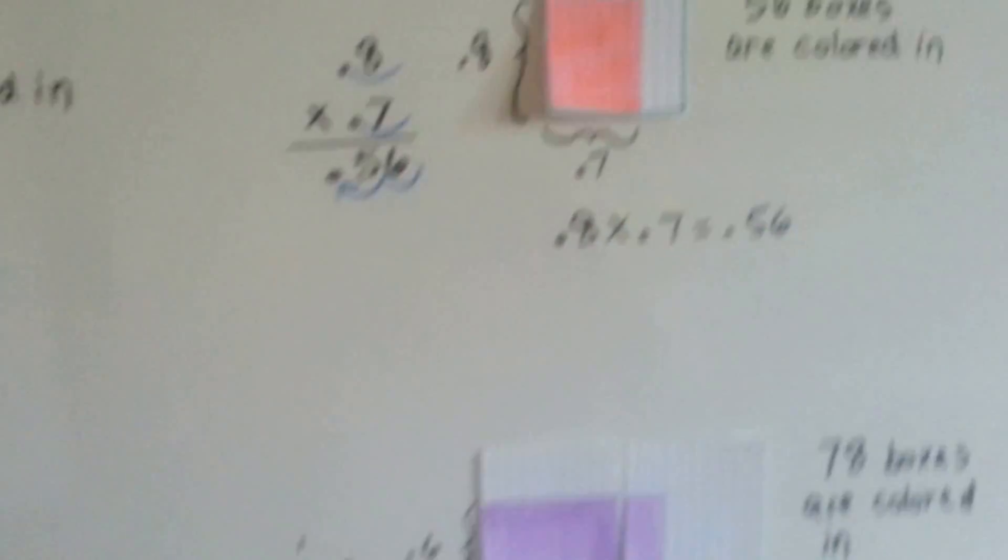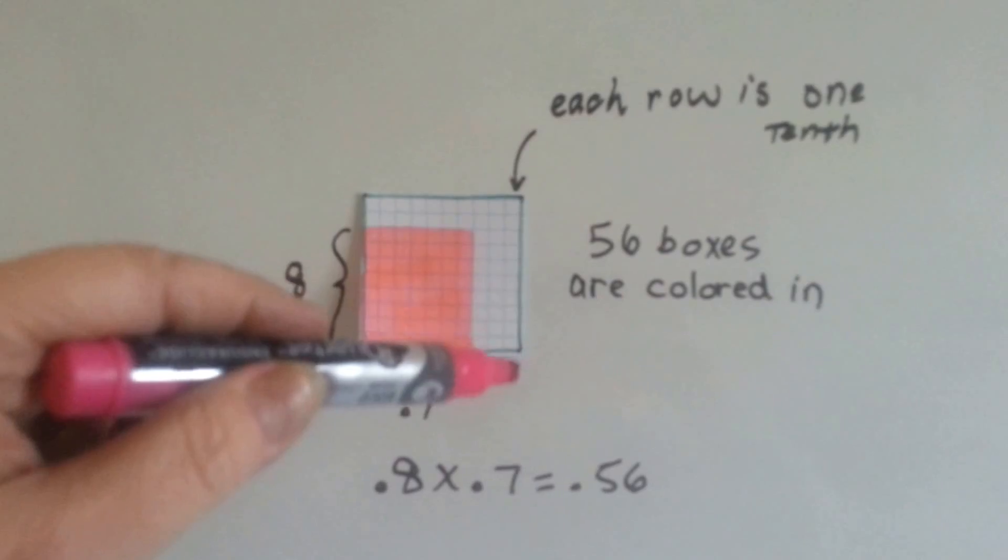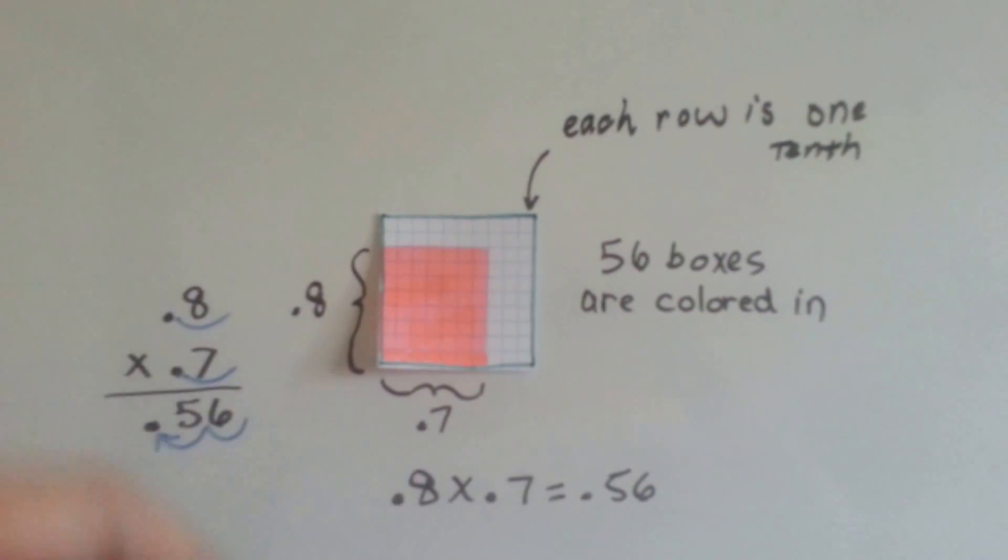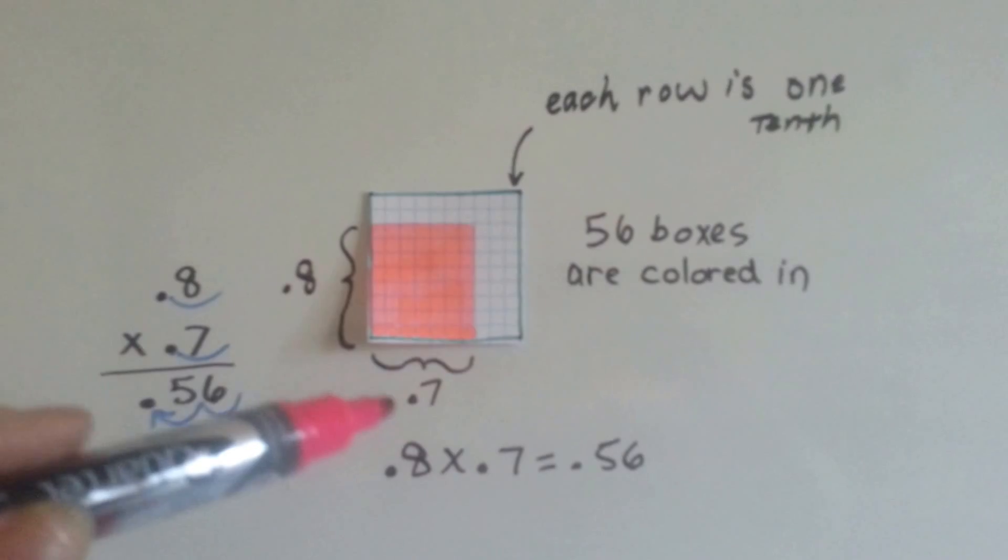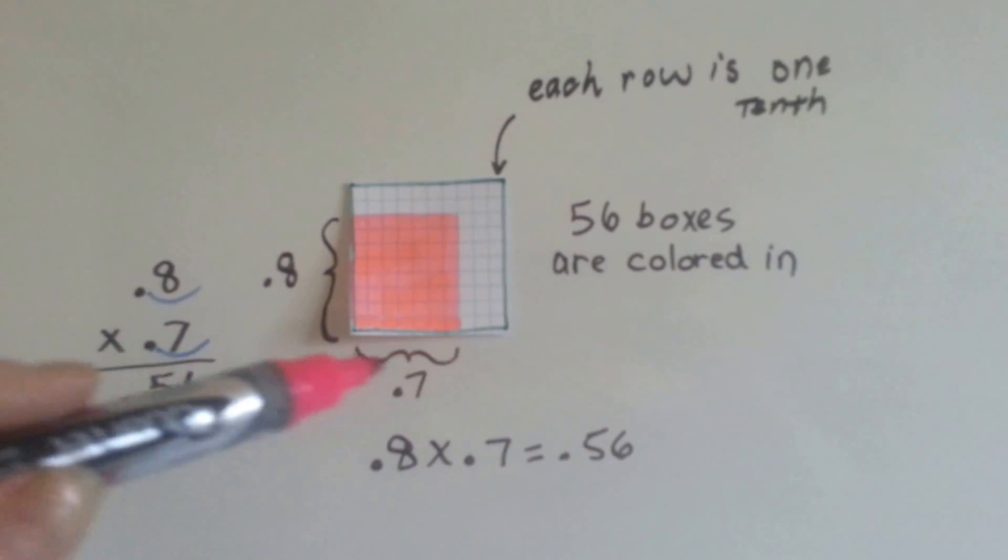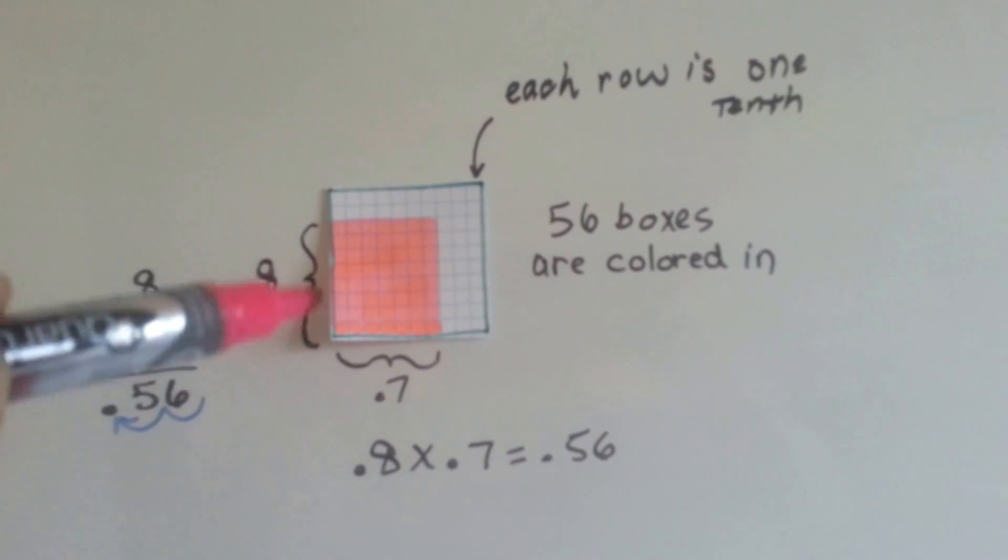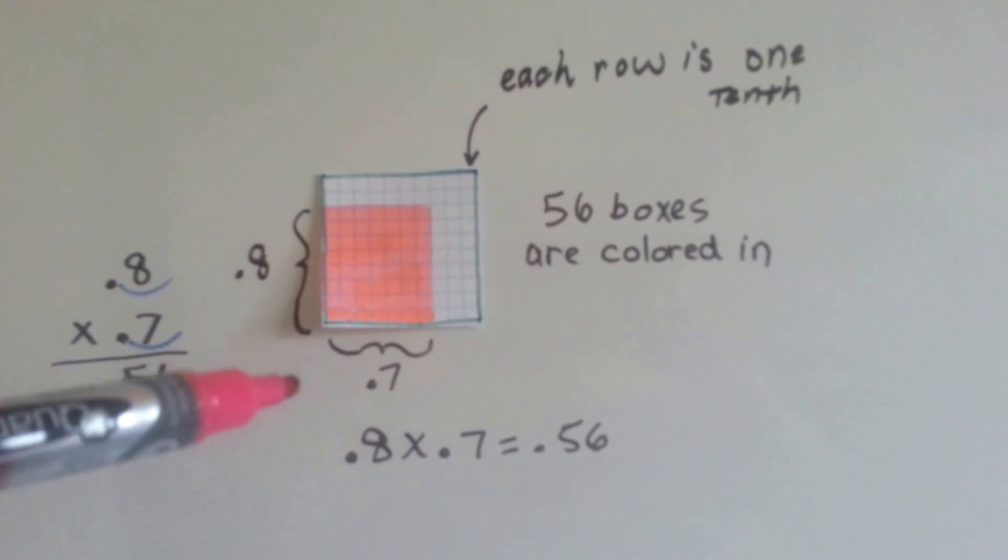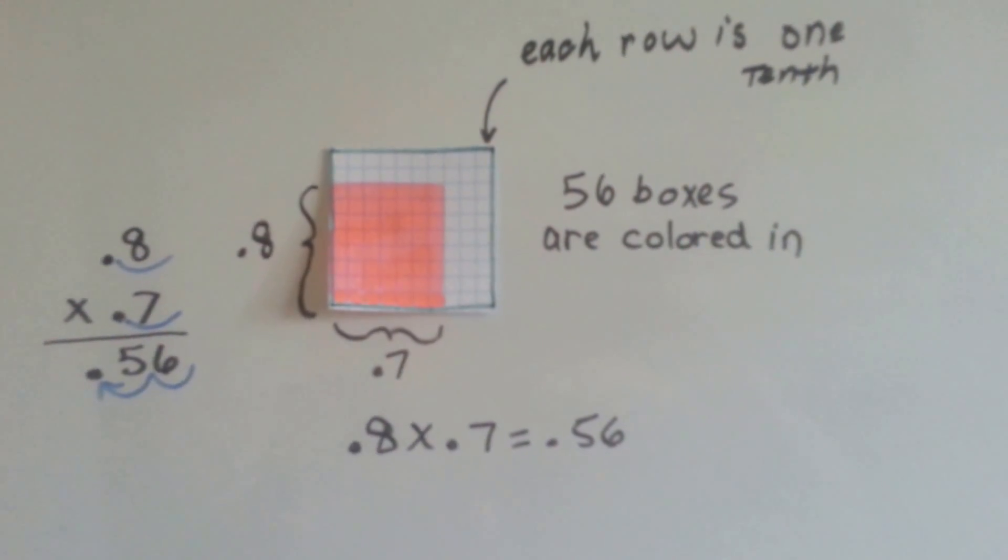Alright, got a couple more. Remember, each of these rows is a tenth of this entire box of 100, okay? So if we have 8 tenths times 7 tenths, we can fill in 7 rows going this way, and we go 8 high this way. We don't go all the way up to the top. 8 times 7 is 56, 8 tenths times 7 tenths is 56 hundredths.